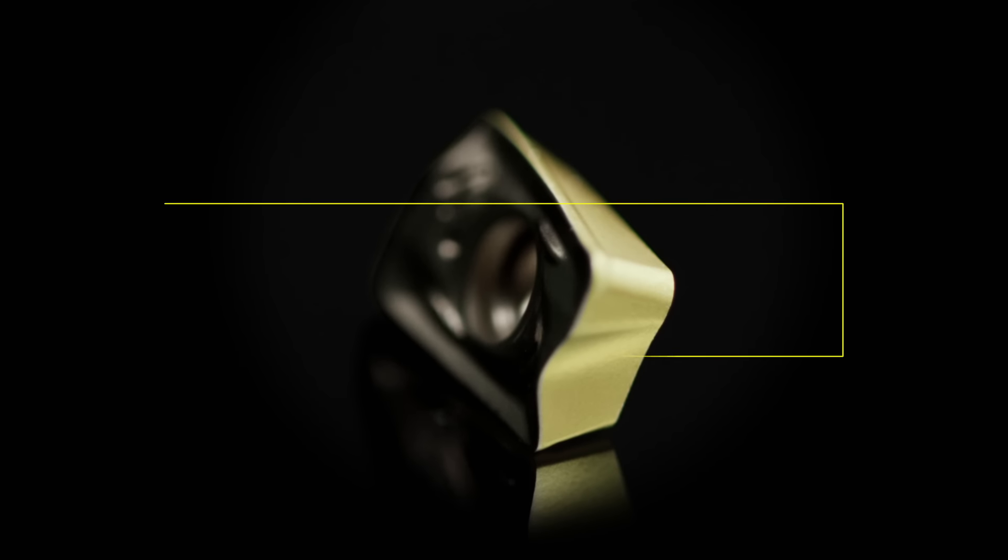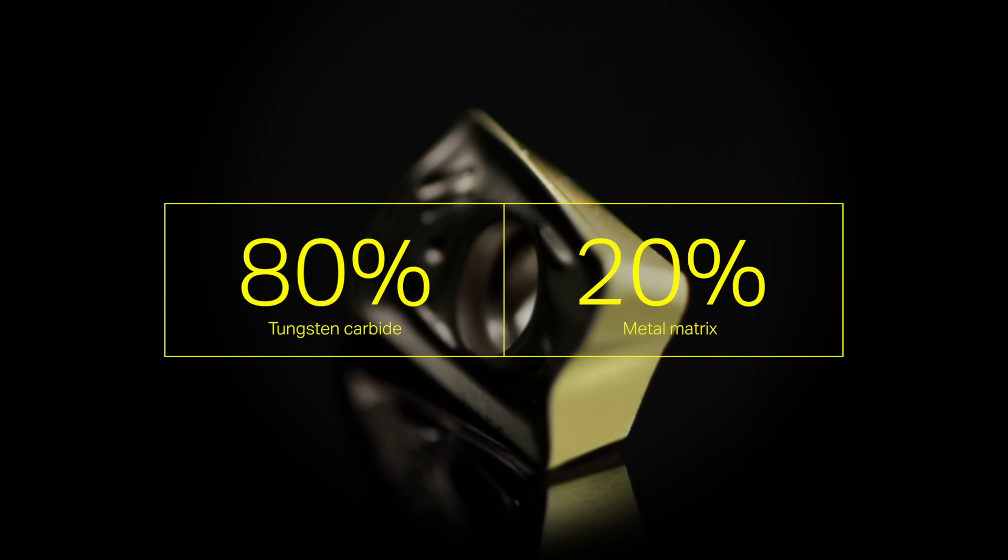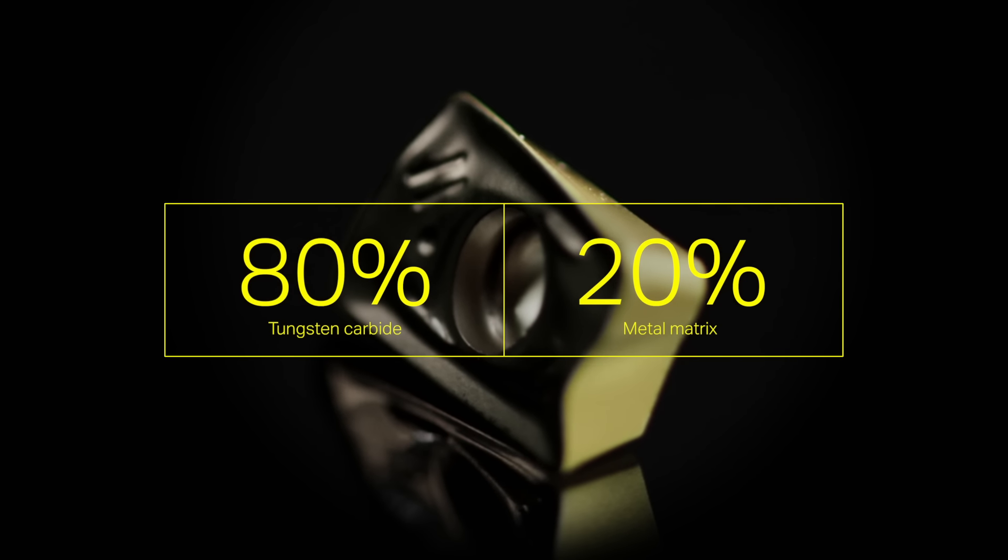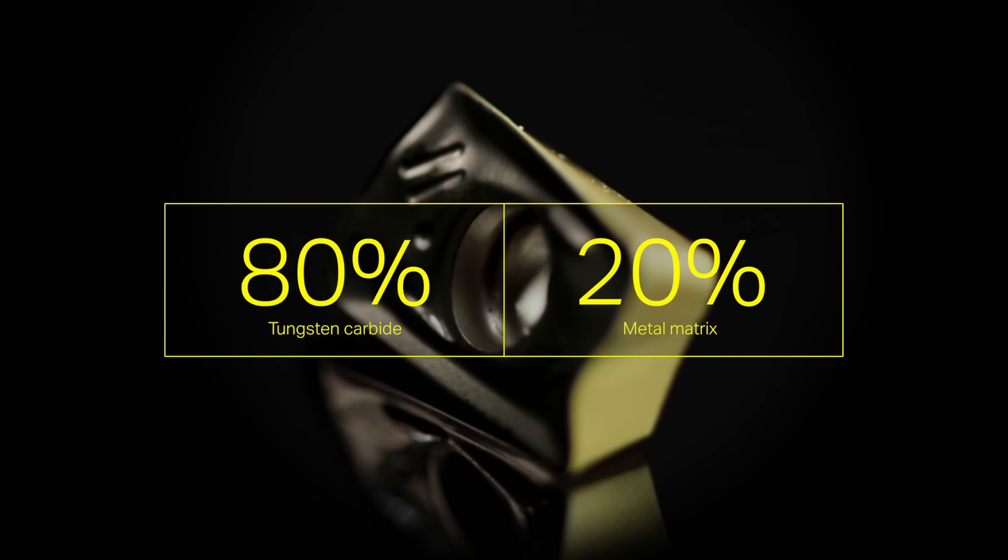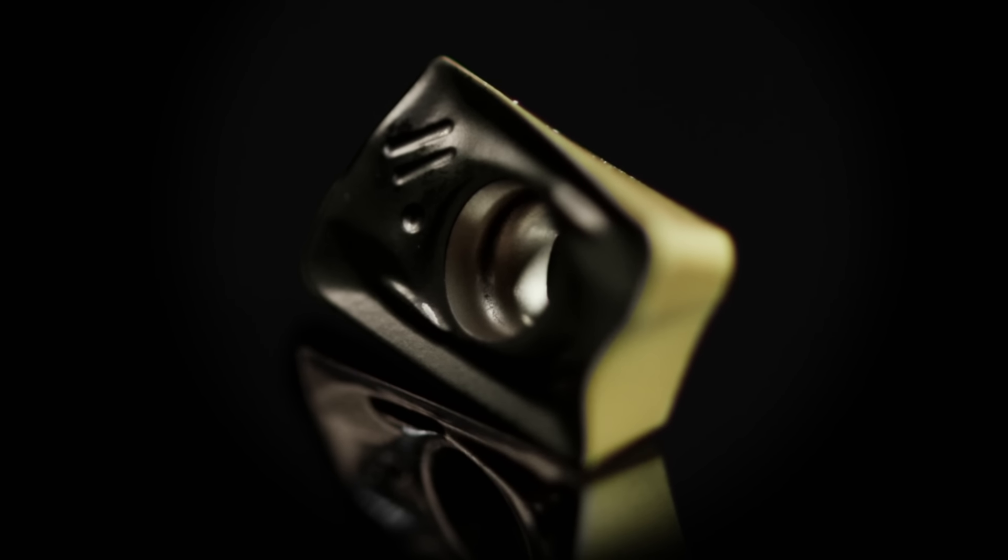A typical insert is made of 80% tungsten carbide and a metal matrix that binds the hard carbide grains together, where cobalt is the most common. It takes more than two days to produce an insert, so it's a complicated process.